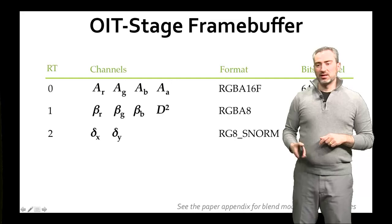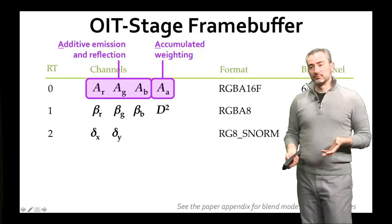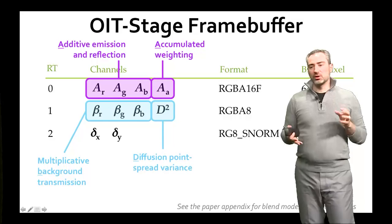Here's what's in the order-independent frame buffer. It has three render targets. The first stores additive terms — emission and reflection — as well as a normalizing constant of the accumulated weighting. The second buffer essentially stores an alpha channel for the background: the multiplicative value indicating how much of the background will get transmitted.